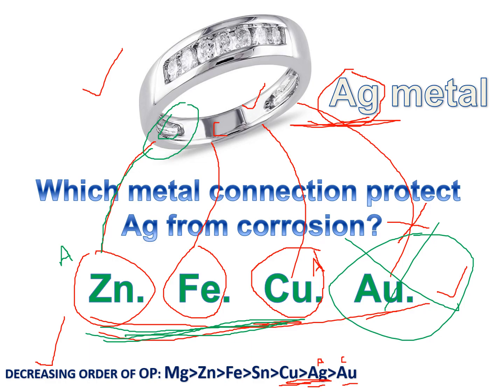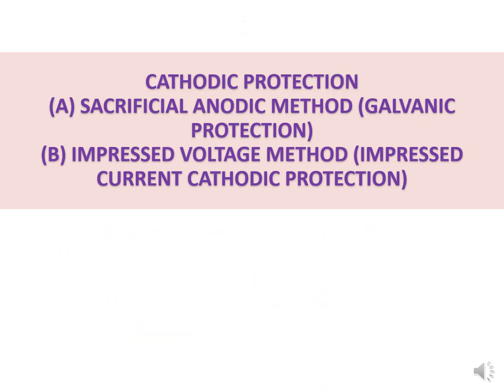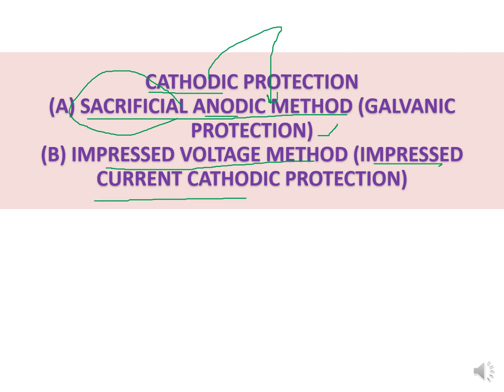Today's topic covered the sacrificial anodic method and the impressed voltage method. In the sacrificial anodic method, the anode itself is involved in corrosion — it sacrifices itself to protect the base metal, which is why it is called the sacrificial anodic method. This is also known as galvanic protection. Note that there is also a surface coating method which I will explain in later sessions — both will have similar type names but different concepts. In the impressed voltage method, we need to pass more voltage than the base metal's voltage.